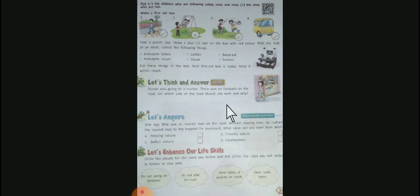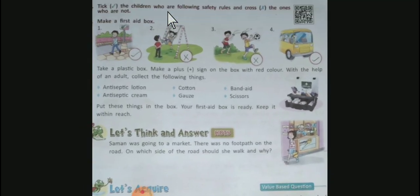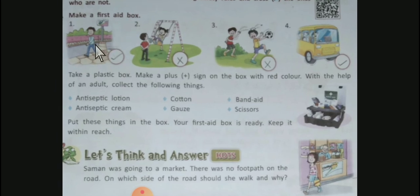Tick the children who are following safety rules and cross the ones who are not. Picture number one: The boy is walking on footpath. This is tick, as the boy follows the safety rule.